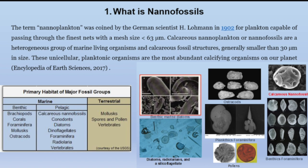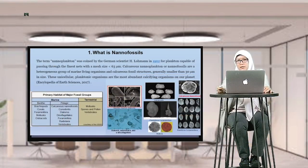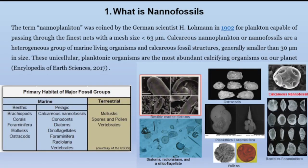Biasanya kita juga bisa menemukan kalkarius nanofosil ini bersama dengan foraminifera, radiolaria, diatom, dinovigilata, dan lain sebagainya. Di sebelah kanan, ini adalah jenis-jenis daripada mikrofosil, di mana salah satunya yang termasuk dalam mikrofosil itu adalah nanofosil. Dari sebelah kiri bisa dilihat ini adalah bentik marine diatom, yang hidupnya relatif di bawah permukaan. Kemudian ada radiolaria dan ada juga silikoflagelata, yaitu berupa silisius flagelata dari bentik marine group.